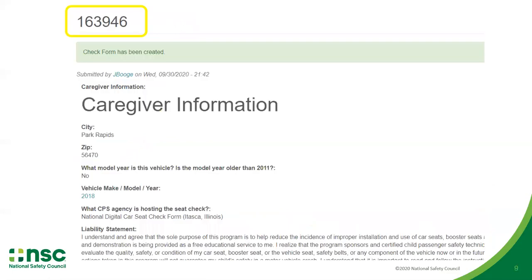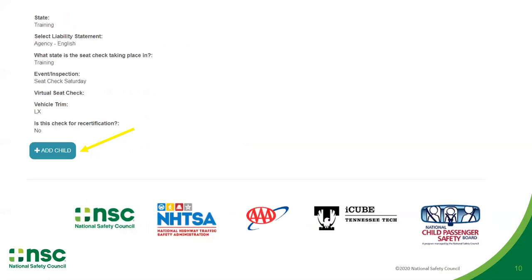Once the form has been saved, it will be issued a unique form ID number. This number is used to identify seat checks should a technician need to refer back to a specific seat check at a later date. Scroll to the bottom of the new form and select add child. You may now begin entering practice seat check information.